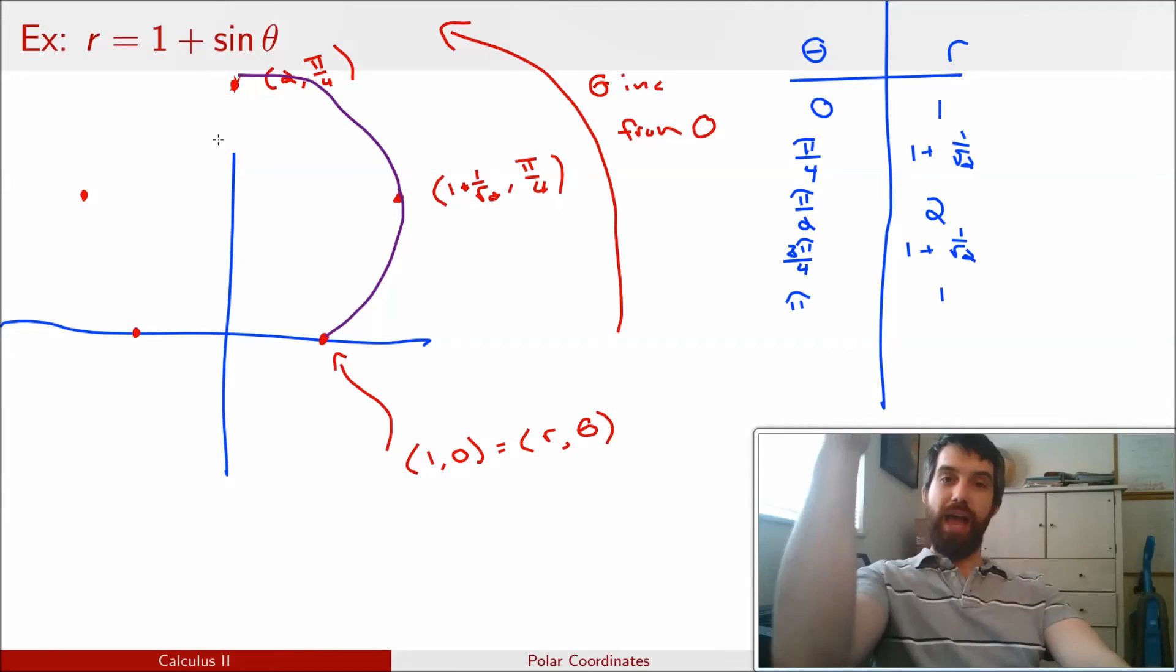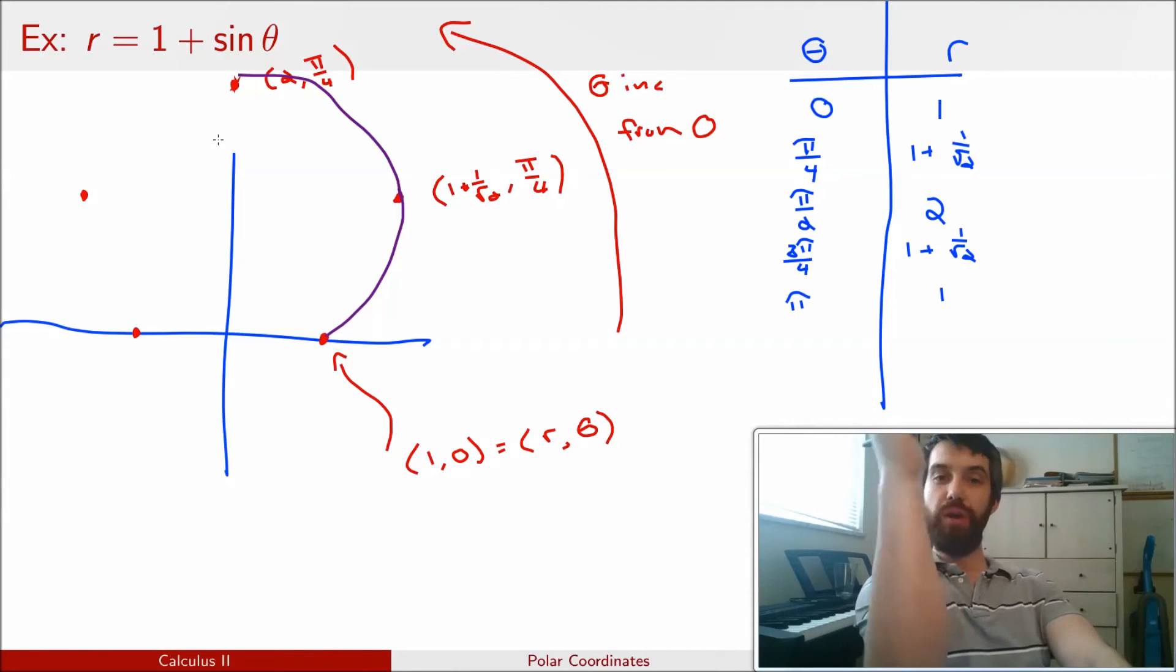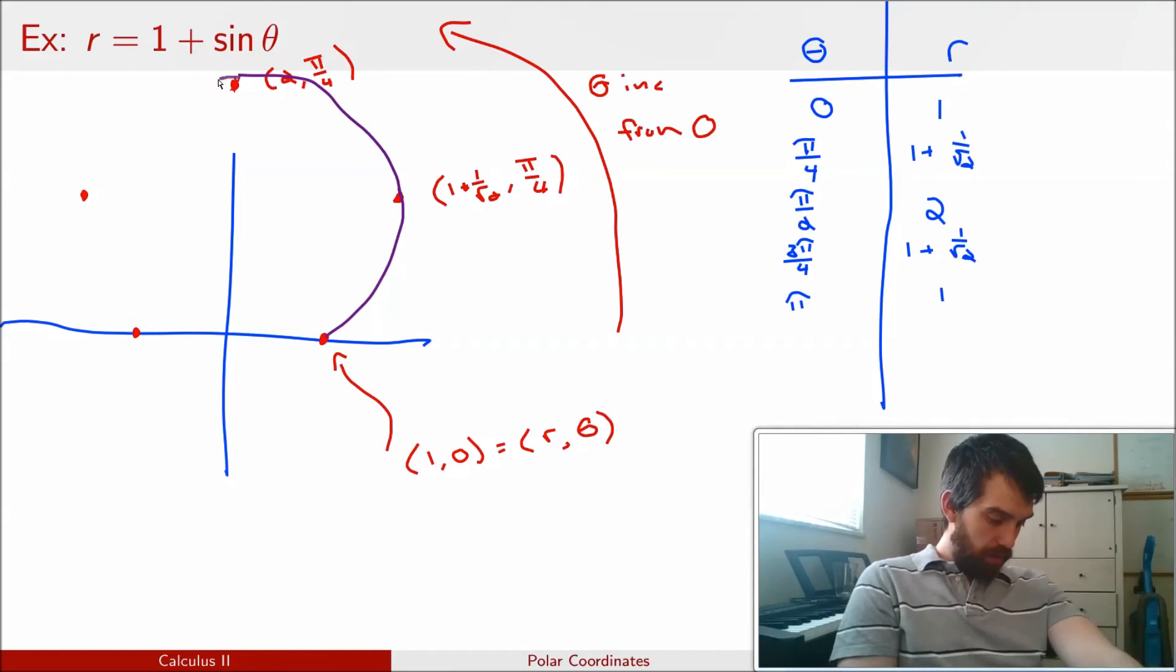But then at this point, as I now start continuing on with my thetas, my radius starts shrinking. And it starts shrinking because my sine has hit the value of 1, which is as big as sine is ever going to get. And then sine starts getting smaller and smaller and smaller, all the way eventually going back down to 0. So in this region between pi over 2 and pi, my sine curve is getting smaller. So 1 plus sine theta is going from the value of 2 down to the value of 1. So I'm going to keep on sending it down. Now it's the 1 over root 2. And now, it's at the value of 1.